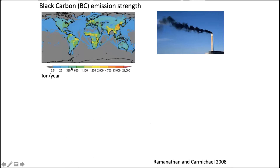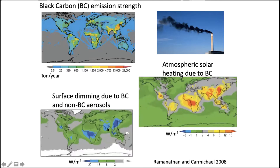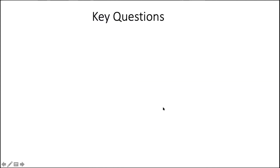Different climate forcing agents may result in different patterns of climate change. For example, black carbon comes from fossil fuel combustion and biomass burning, is emitted over continents, and is dark so it absorbs shortwave radiation. It heats the atmosphere but less shortwave radiation reaches the surface, resulting in surface dimming. This pattern is very different from that forced by CO₂. So we want to know: if the climate is perturbed by something like black carbon, how does stratospheric water vapor respond?